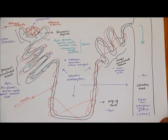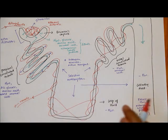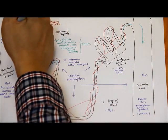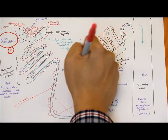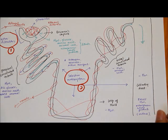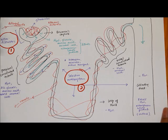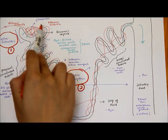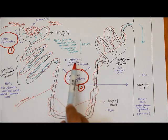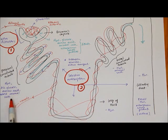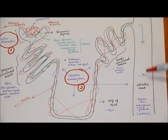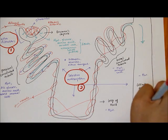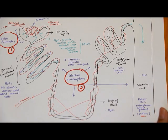In summary, the nephron has two processes for urine formation. The first is ultrafiltration, where high blood pressure at the glomerulus forces small substances into the Bowman's capsule. The second is selective reabsorption, where useful substances such as glucose, amino acids, mineral salts, and water are reabsorbed back into the bloodstream. Whatever is not needed — excess water and nitrogenous waste products — is removed via the collecting duct as urine.